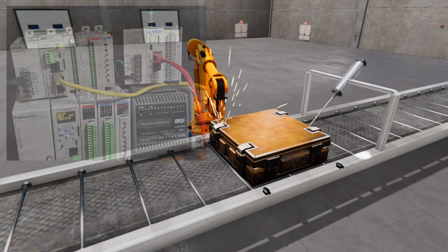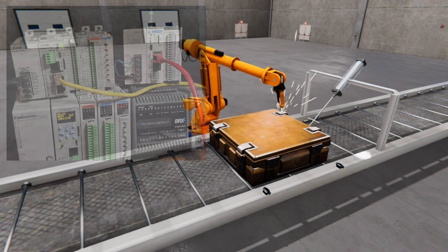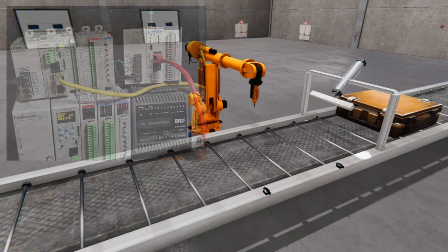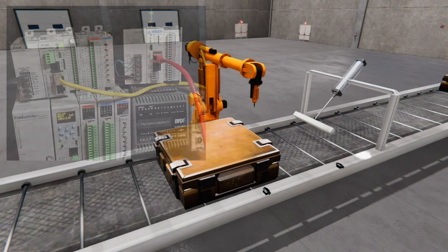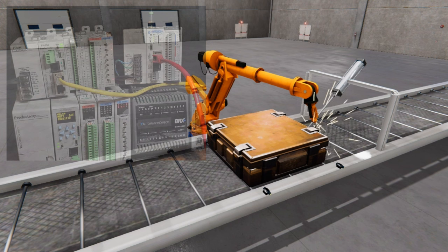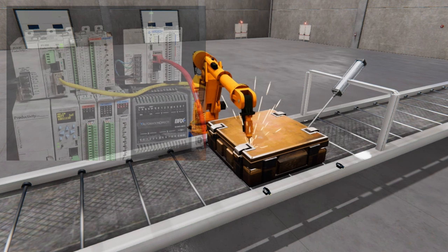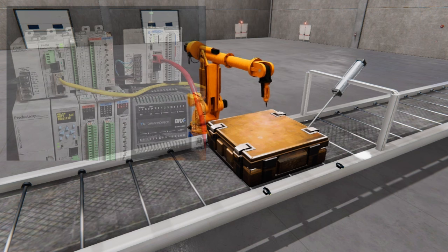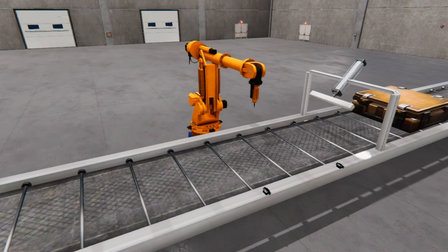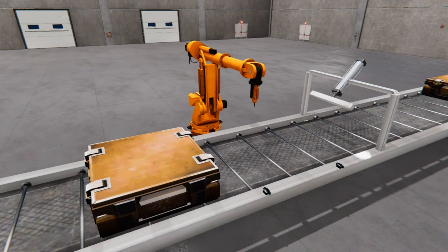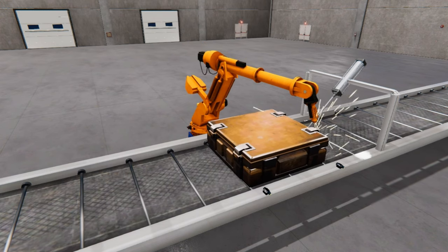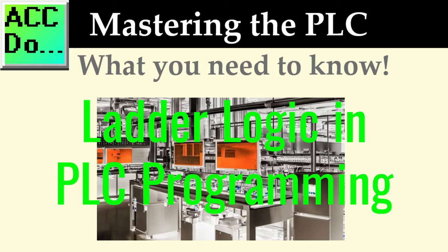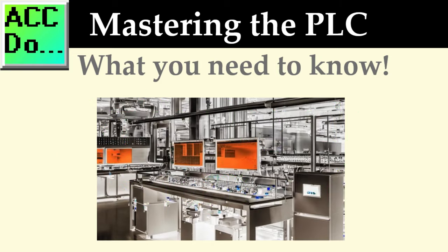Furthermore, PLCs have found their way into our homes, integrated into everyday appliances like washing machines and dishwashers. Beyond that, they manage traffic light systems, elevator controls, and building automation setups, especially for regulating heating, ventilation, and air conditioning (HVAC) systems. In essence, PLCs simplify the management of intricate operations across various industries, significantly boosting productivity, enhancing the quality of final products, and minimizing issues like machine downtime and human error.